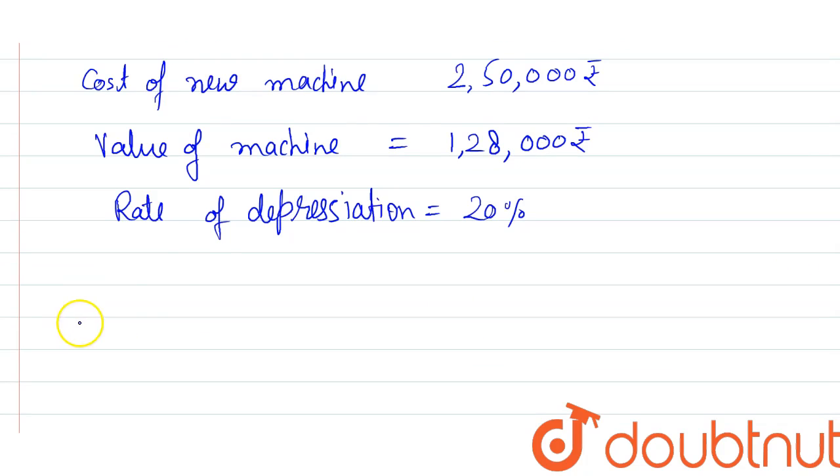So this will also be a situation like compound interest. Formula will remain same: A equals P, and for depreciation we will write minus R upon 100 to the power n. So amount means the value of machine after certain years. This will work like amount: 1,28,000. Principal sum is the initial value.